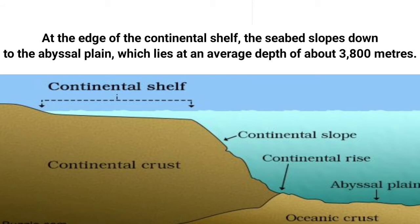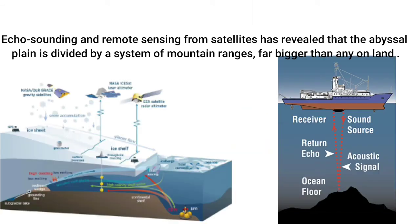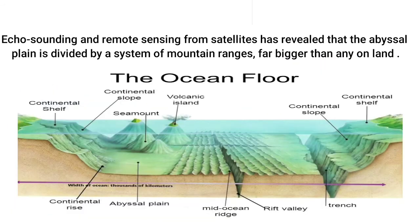The abyssal plain lies at an average depth of about 3,800 meters. On this deep ocean floor is a layer of sediment made up of clays and oozes formed from the remains of tiny sea creatures, and occasional mineral-rich deposits. Echo-sounding and remote sensing from satellites has revealed the features of the abyssal plain.